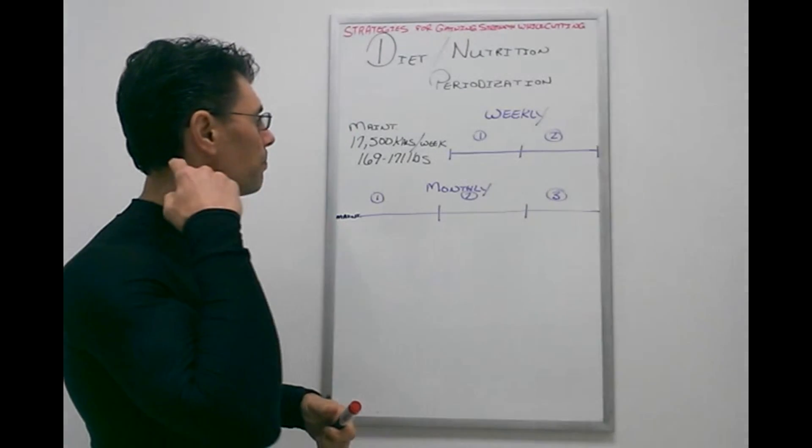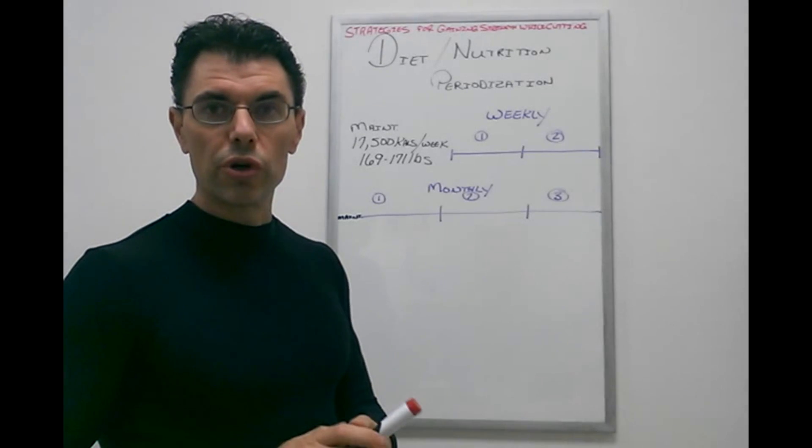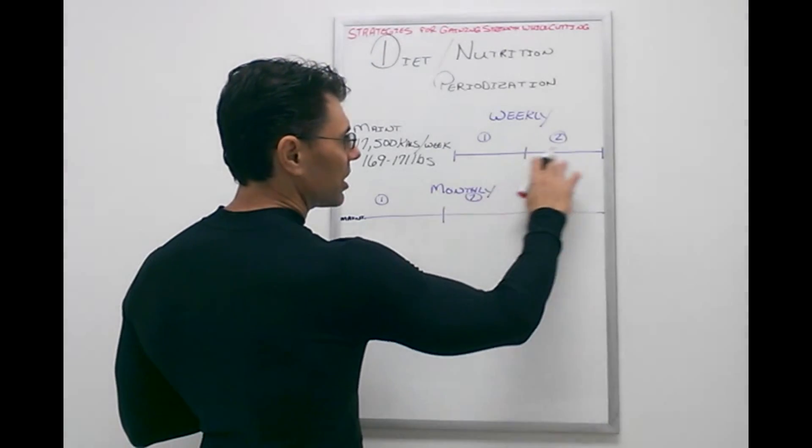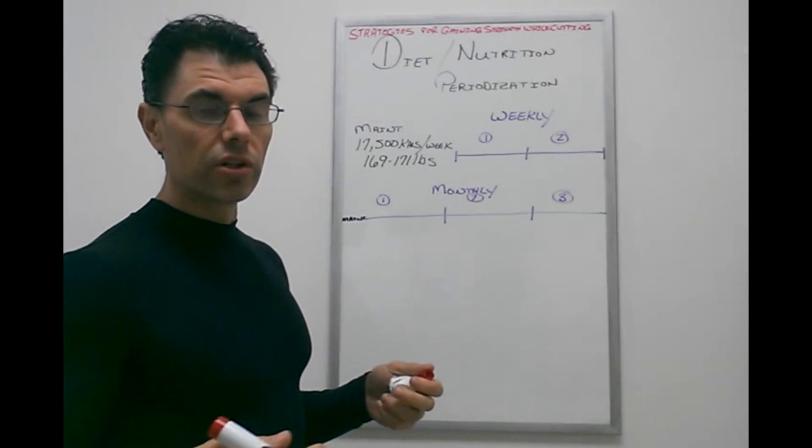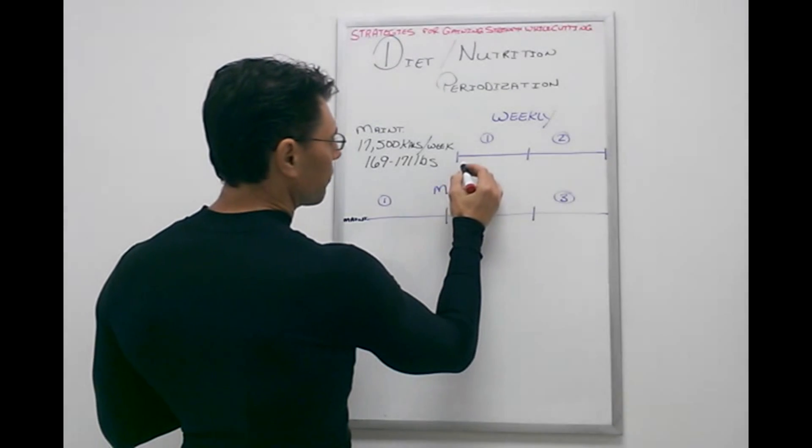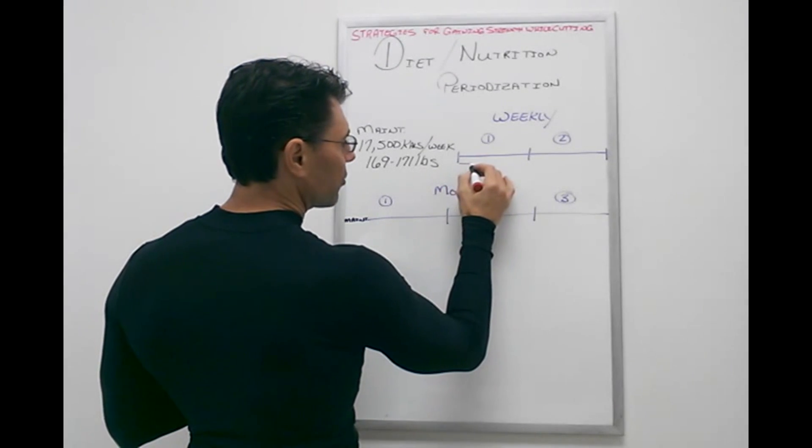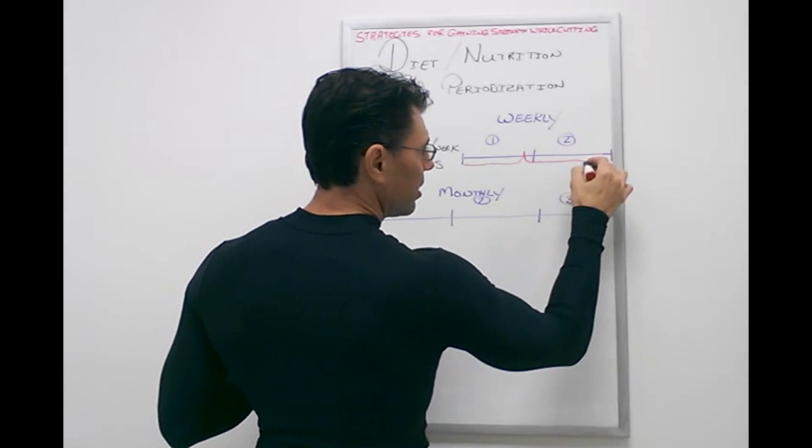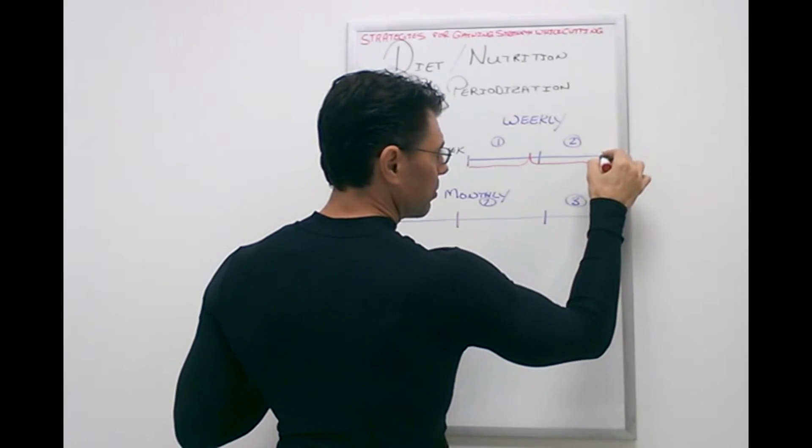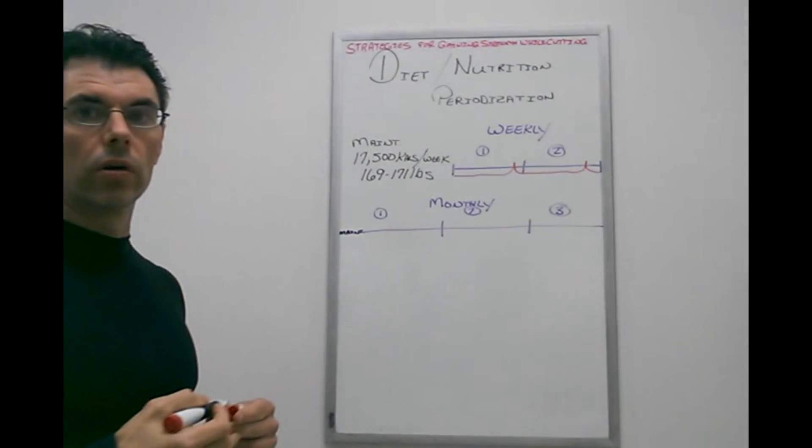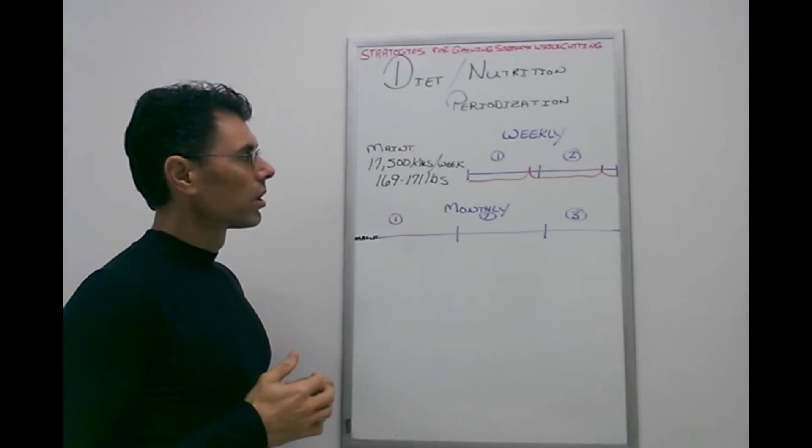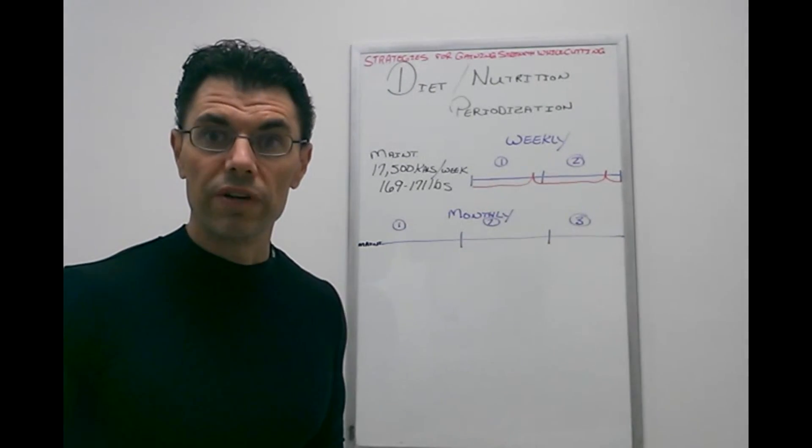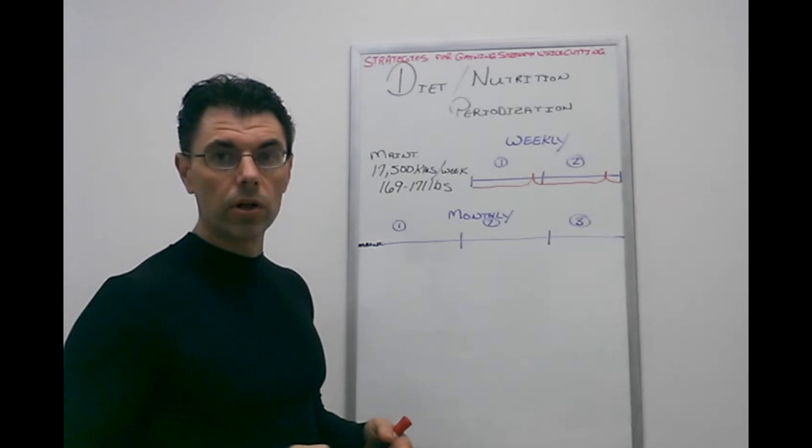First, let's go over traditional diet periodization. If we've got this line here as maintenance, the way we traditionally do diet periodization is we travel long in the week at a caloric deficit, and then once a week we get a high day. Then we come back down into our caloric deficit, and once a week we get that next high day.